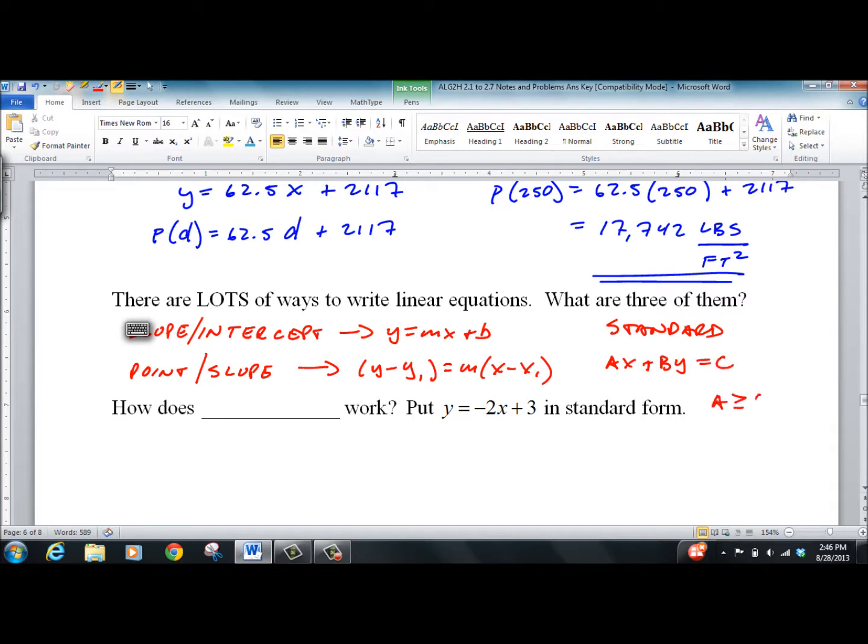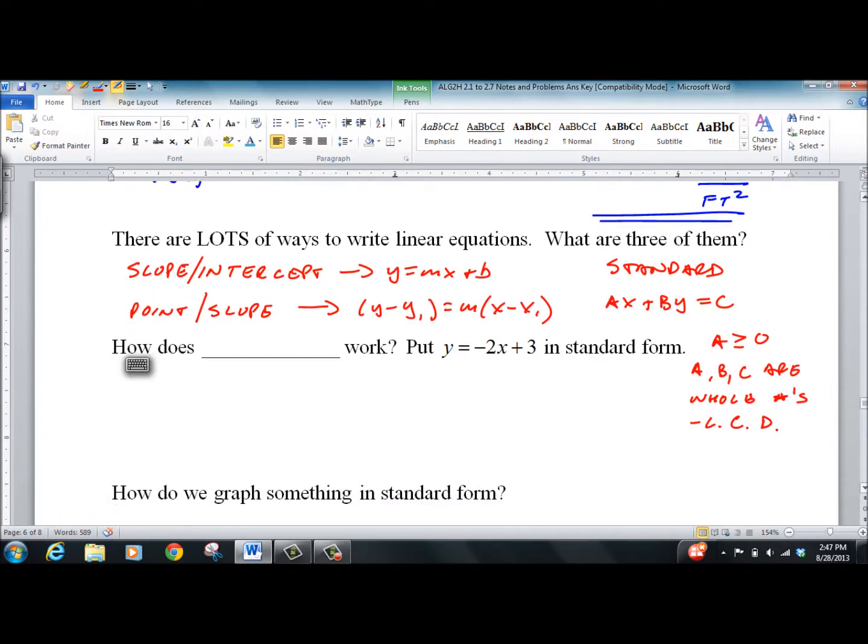A is positive. A, b, c are whole numbers. And they're at their least common denominator. You'll see what I mean by that later.